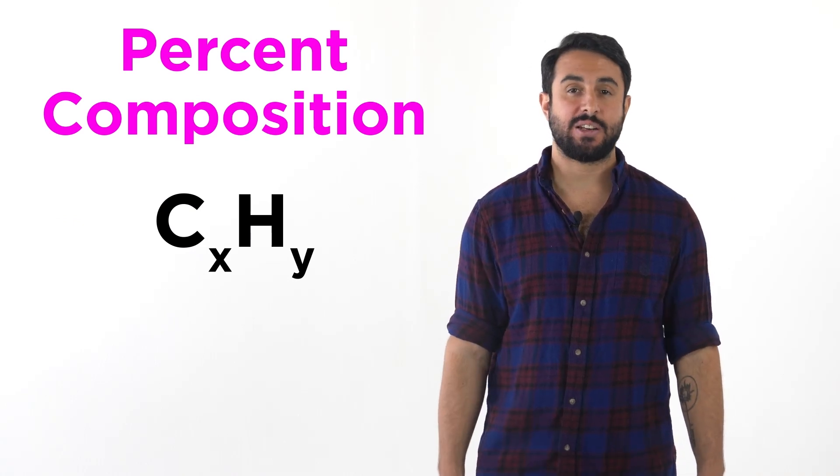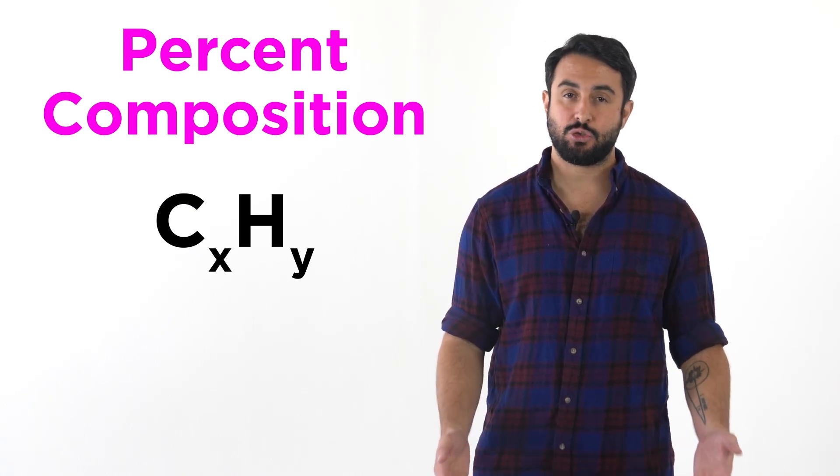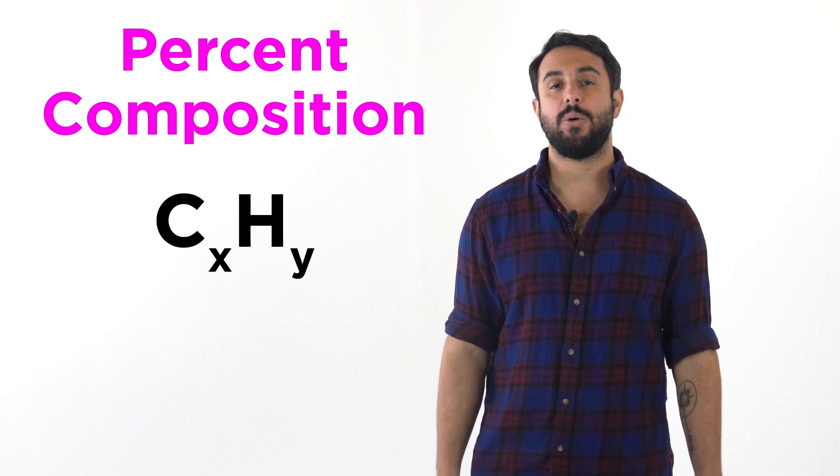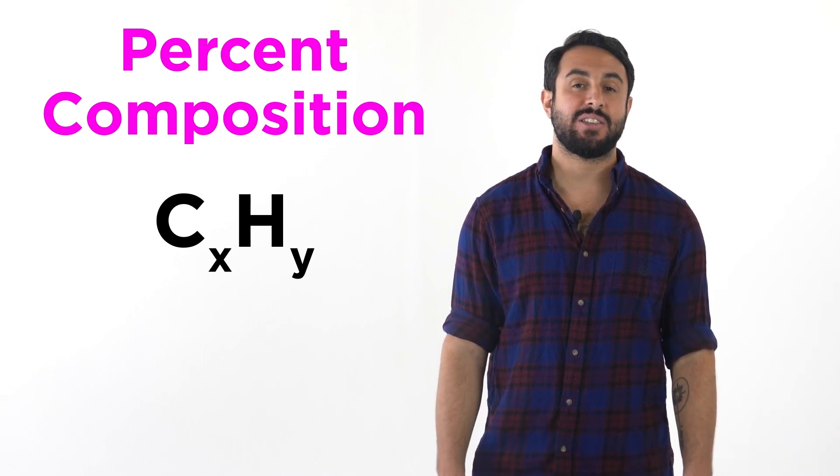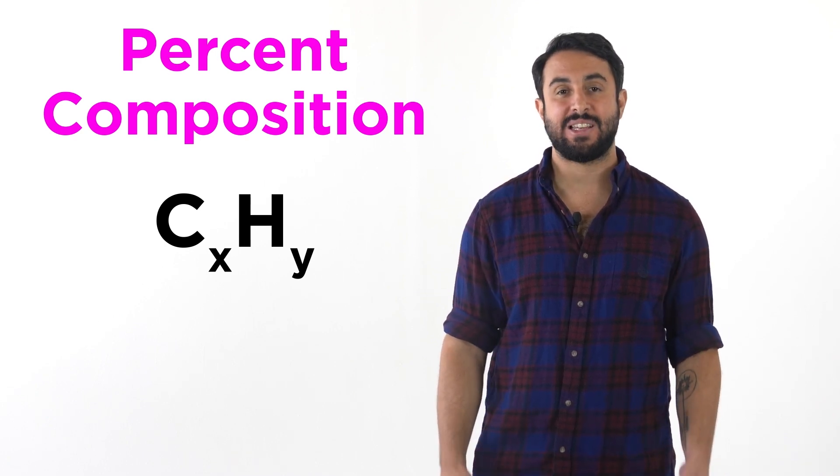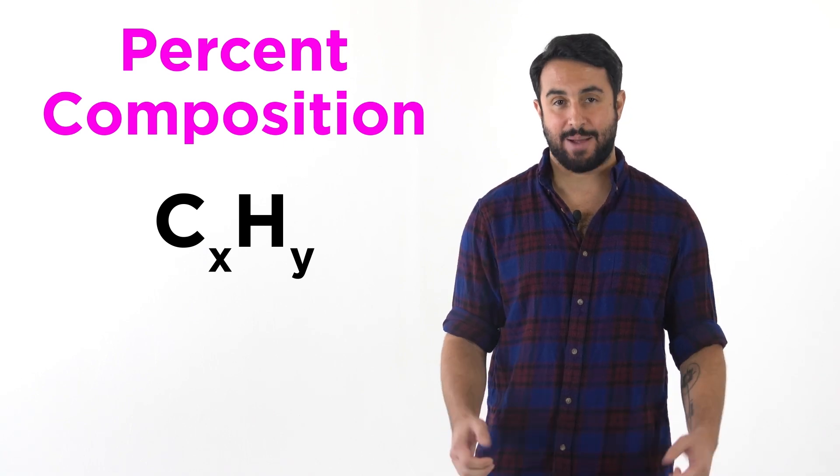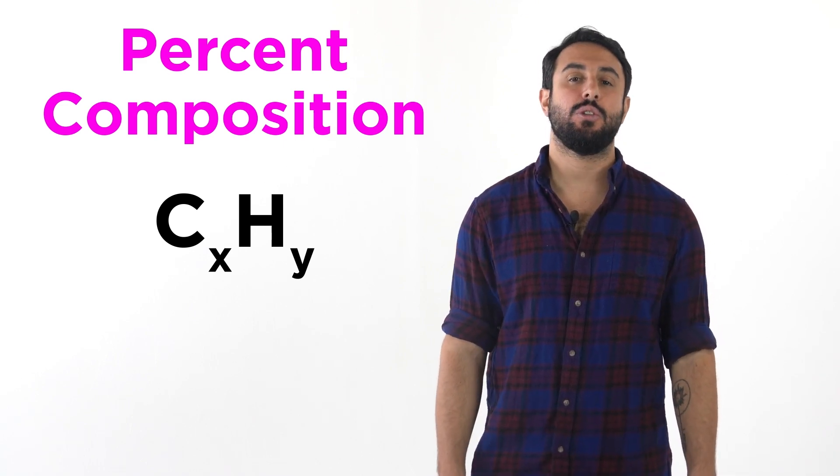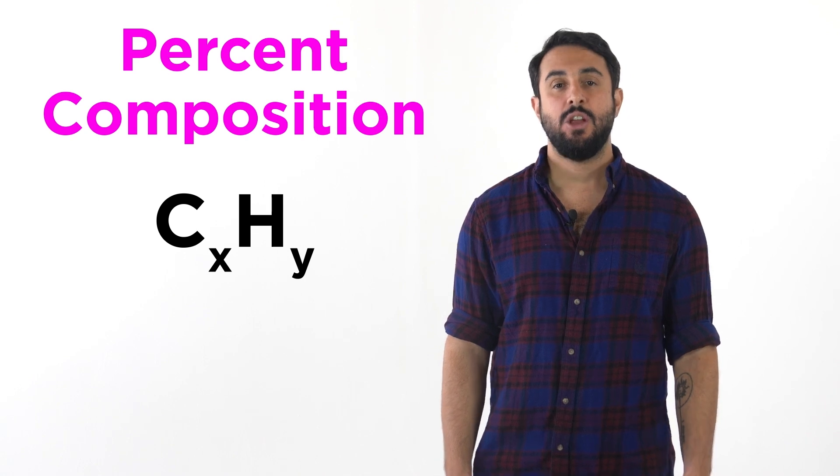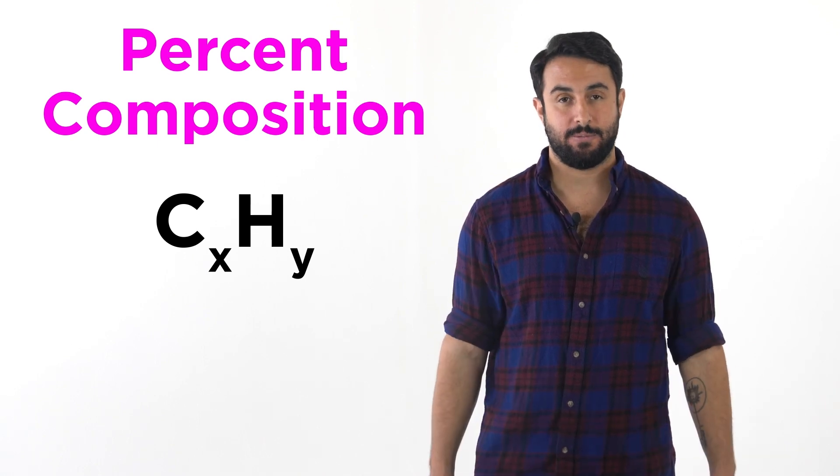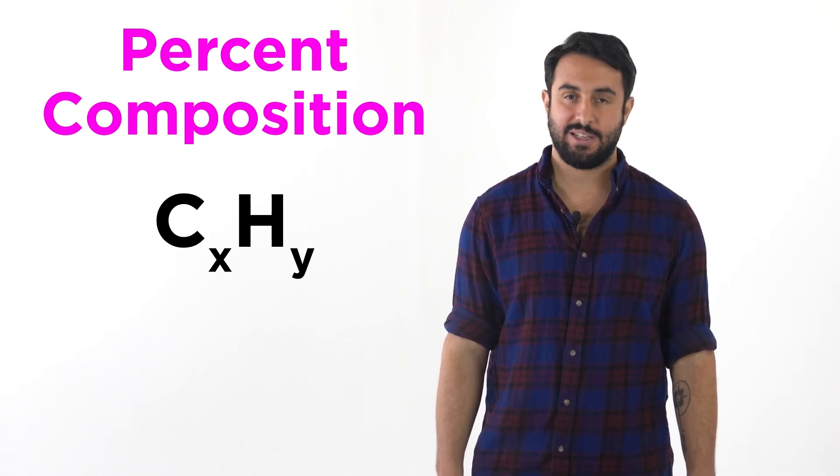As we can see, calculating the percent composition of a compound is extremely straightforward if we know its chemical formula and the atomic masses of all the elements contained within it. This information has a number of applications, so let's continue learning some chemistry concepts, so that we can see what those will be. Professor Dave for Chegg, see you next time!